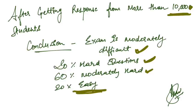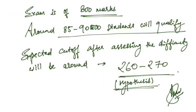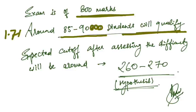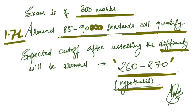The exam is out of 800 marks, so around 85 to 90,000 students will qualify out of approximately 1.7 lakh students who appeared. The expected cutoff after assessing the difficulty would be around 260 or 270. This is a hypothesis, but I think 260 to 270 will be the cutoff.